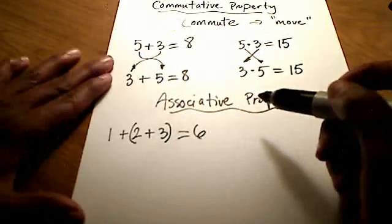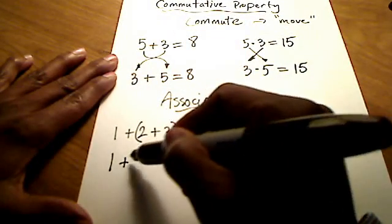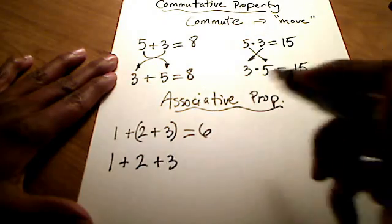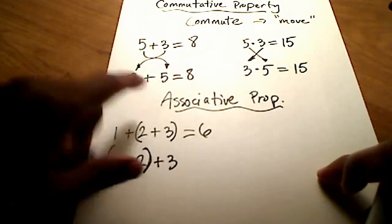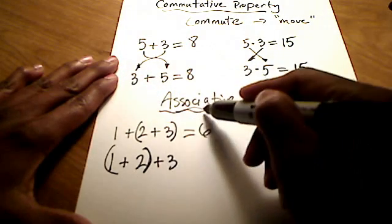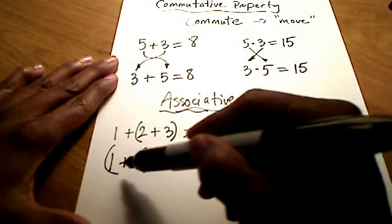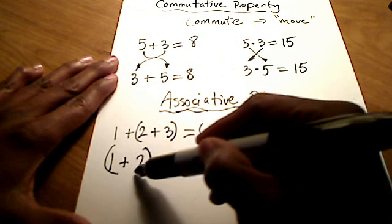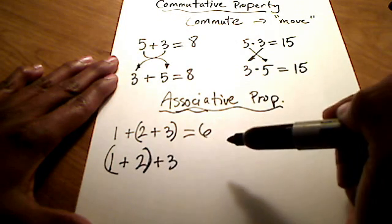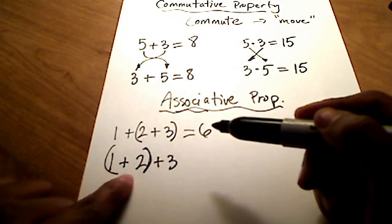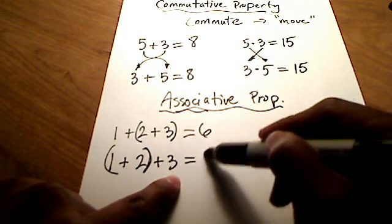But if I wrote the numbers in the exact same order, but put the parentheses around the one plus the two, now I am asking you to do a different association, a different grouping here. I want these guys to be friends first, to work these out first, and then add the three. So let's see, this still gives me three plus three which is obviously the same answer.